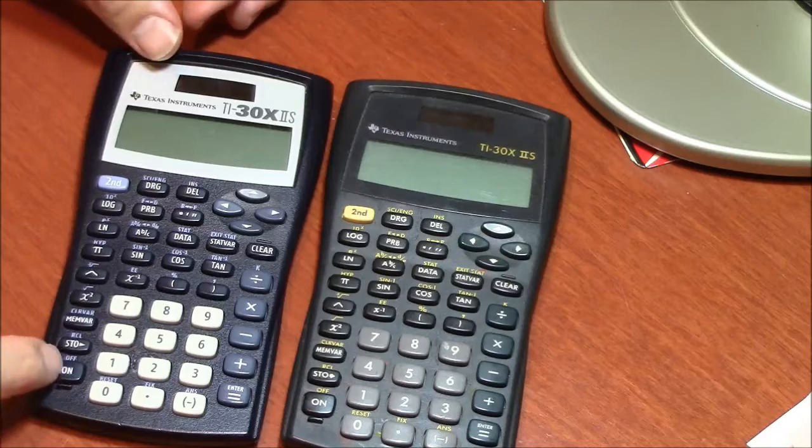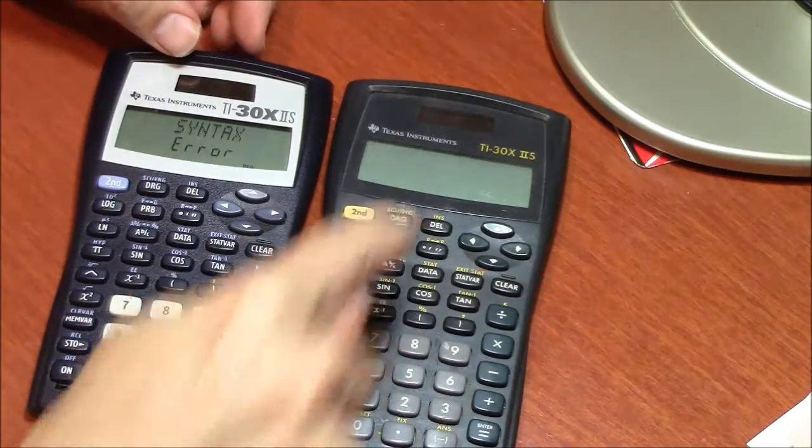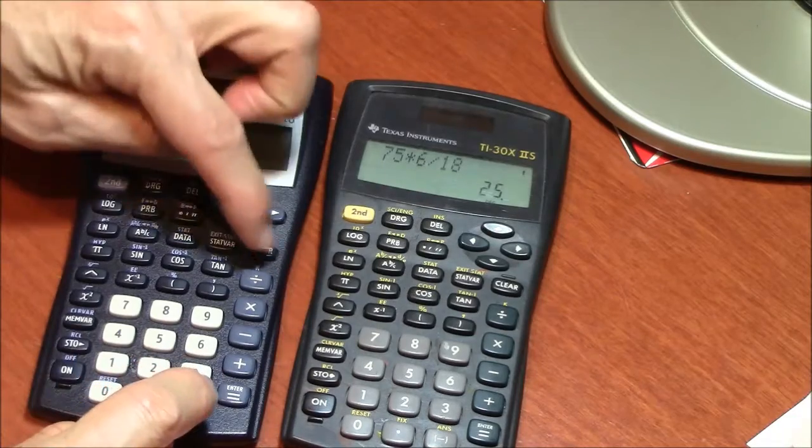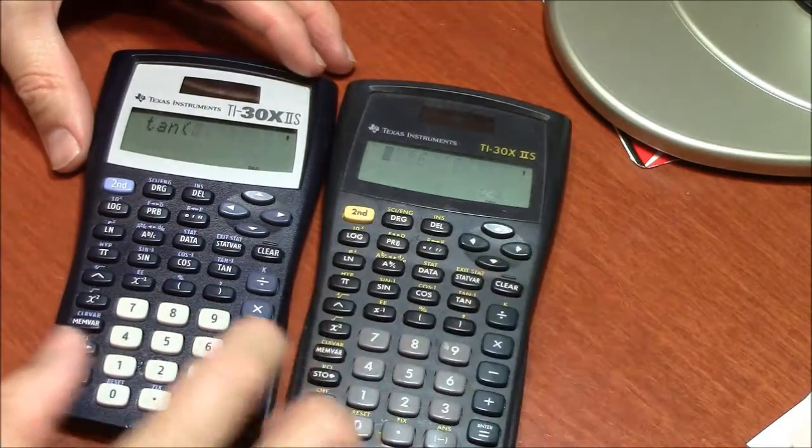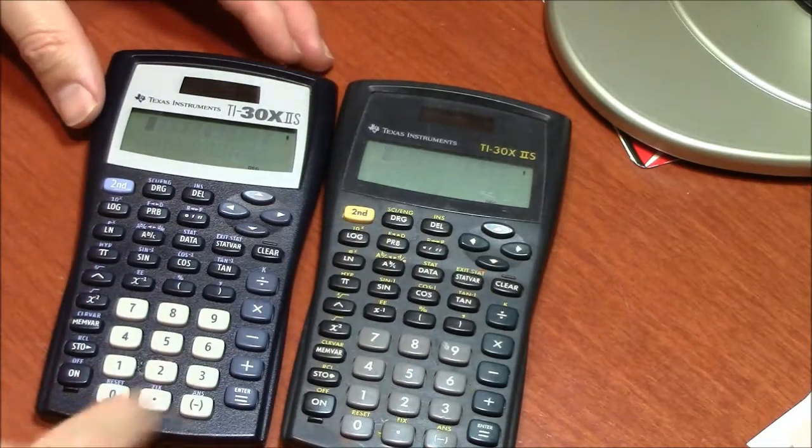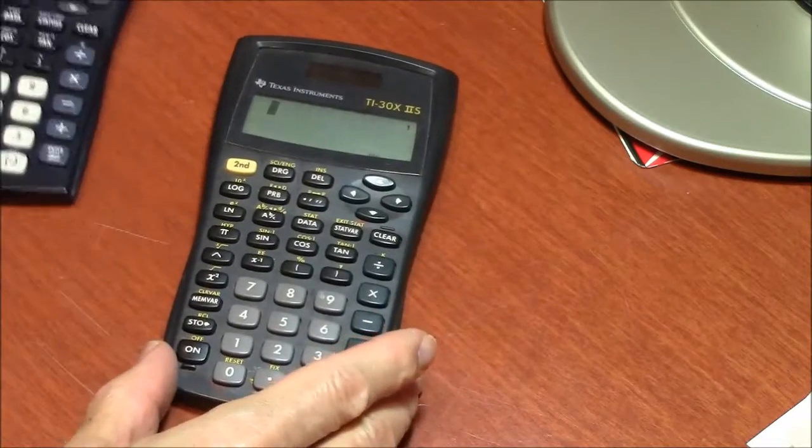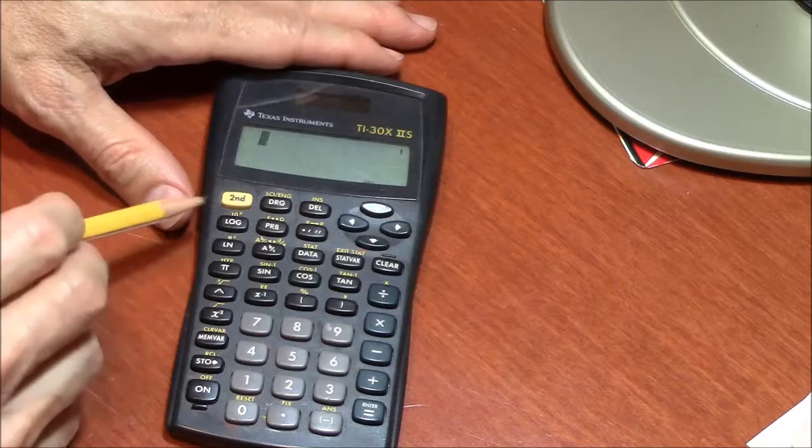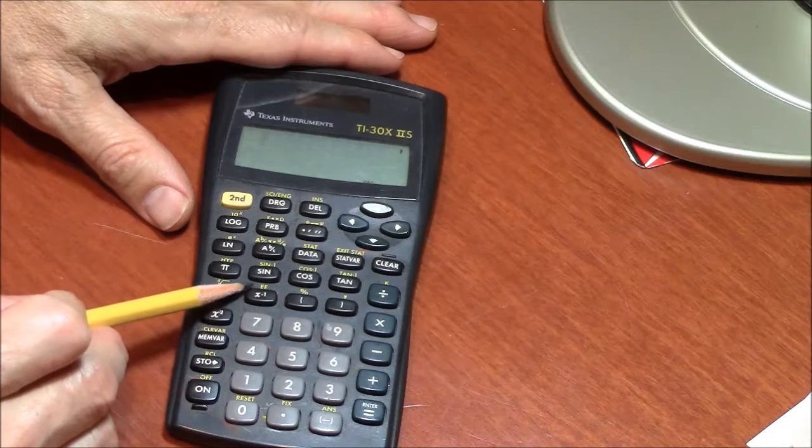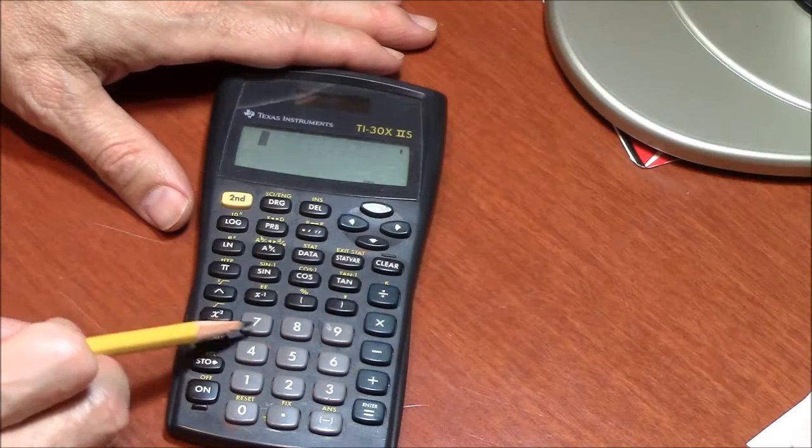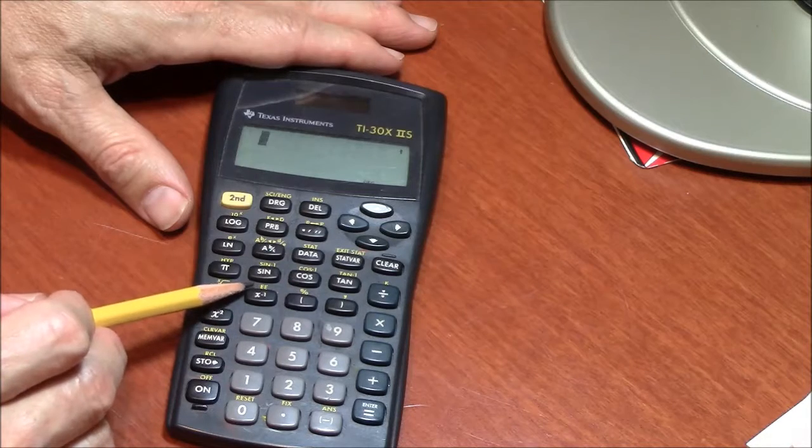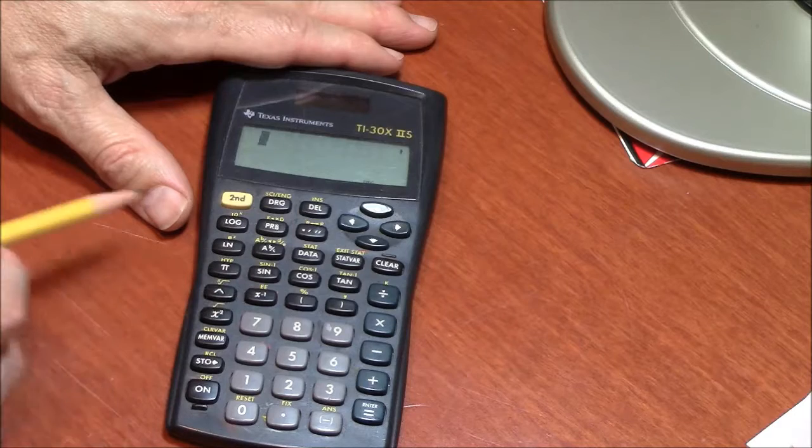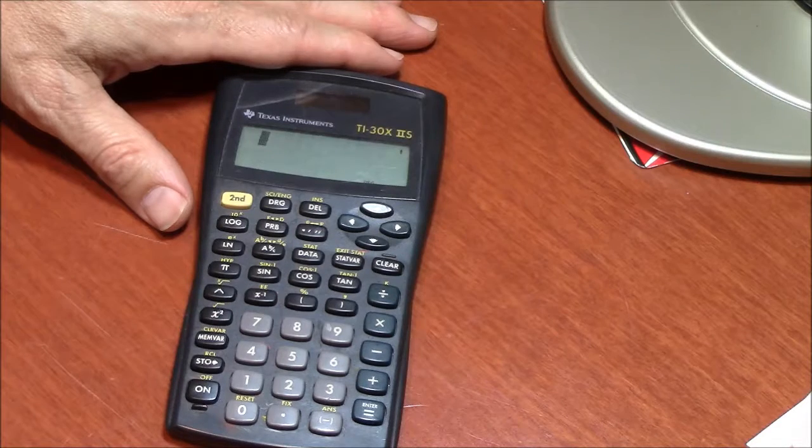Some of you have this type of calculator, the TI-30. It may look like this, it may be a different color, but they function the same. On this type of calculator, the button to press for scientific notation is here, EE. It's above the number 7, in a different color. I need to use the second function to access this scientific notation.